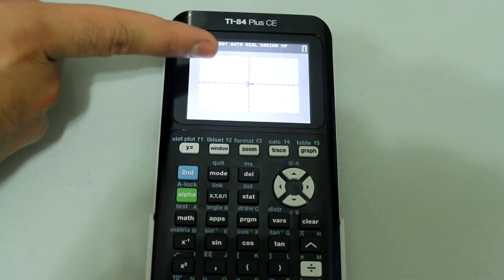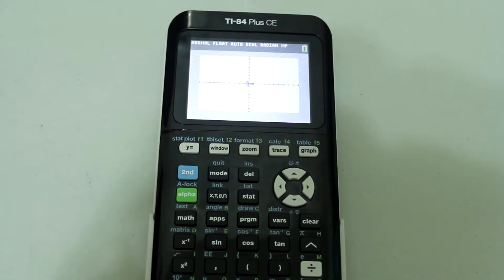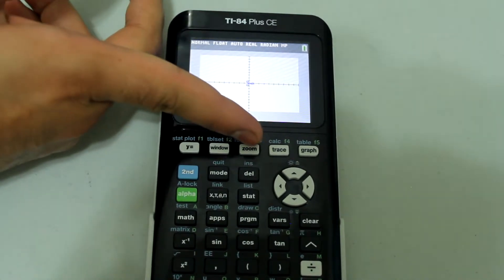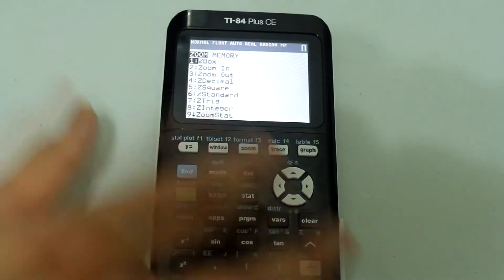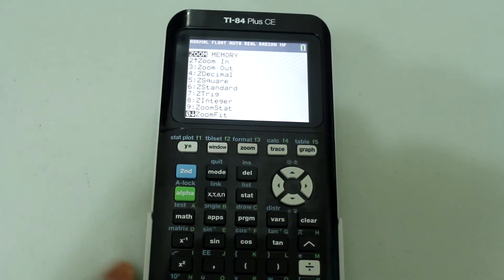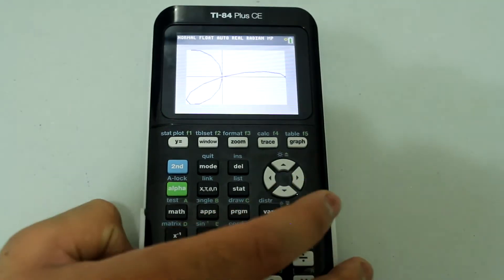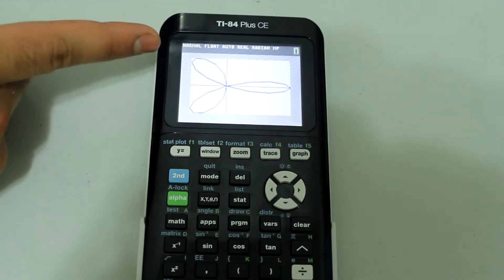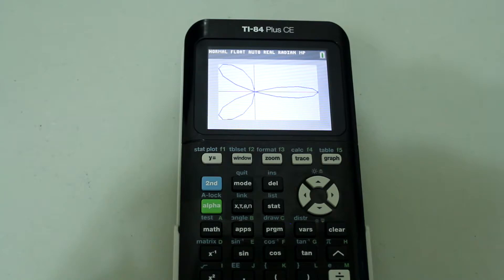And this graph might be really small because the graphing window is not appropriate. So press zoom and arrow down to zoom fit. Press enter, and the graphing window will be adjusted to suit your graph.